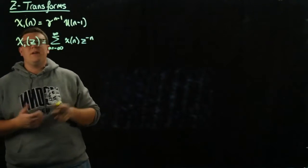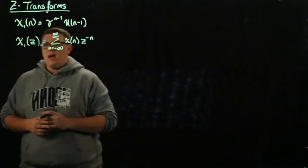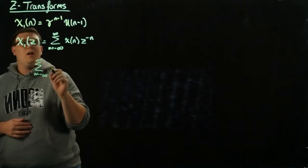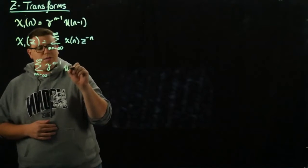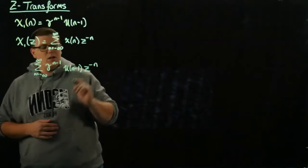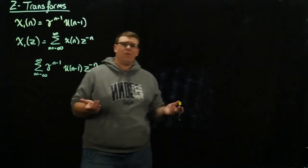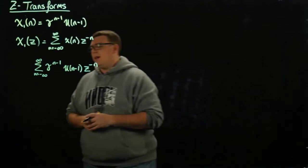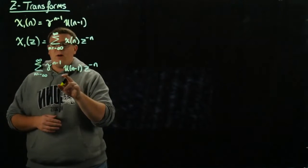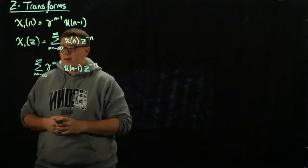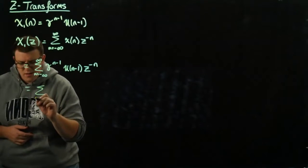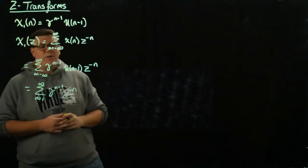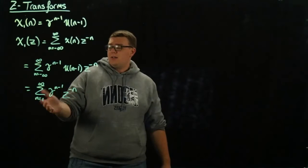For the first function, x1(n) equals gamma to the n minus 1 times u(n minus 1), where u is the Heaviside function. Directly applying the Z-transform formula gives the summation from n equals negative infinity to infinity of gamma to the n minus 1 times u(n minus 1) times z to the negative n. The Heaviside function makes every term zero before n equals 1, so equivalently we write the summation from n equals 1 to infinity of gamma to the n minus 1 times z to the negative n.